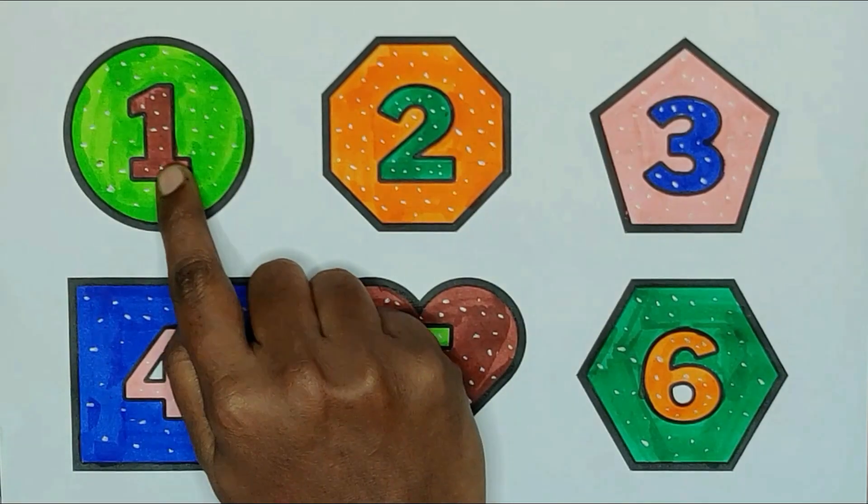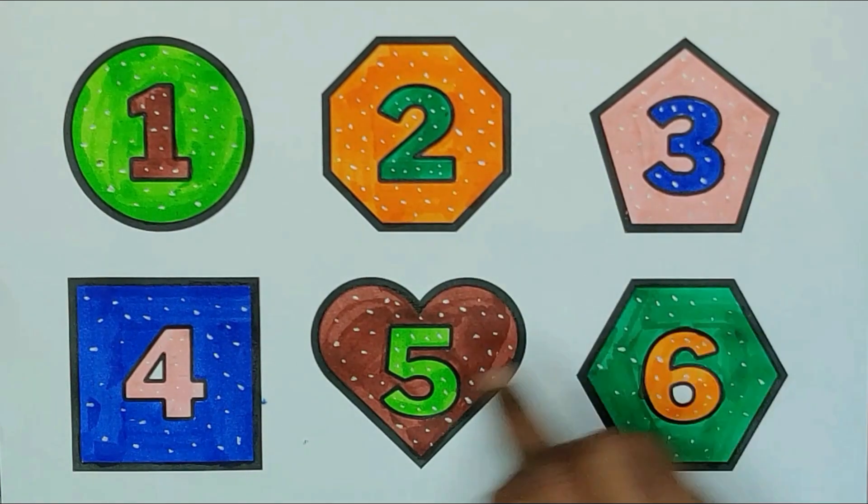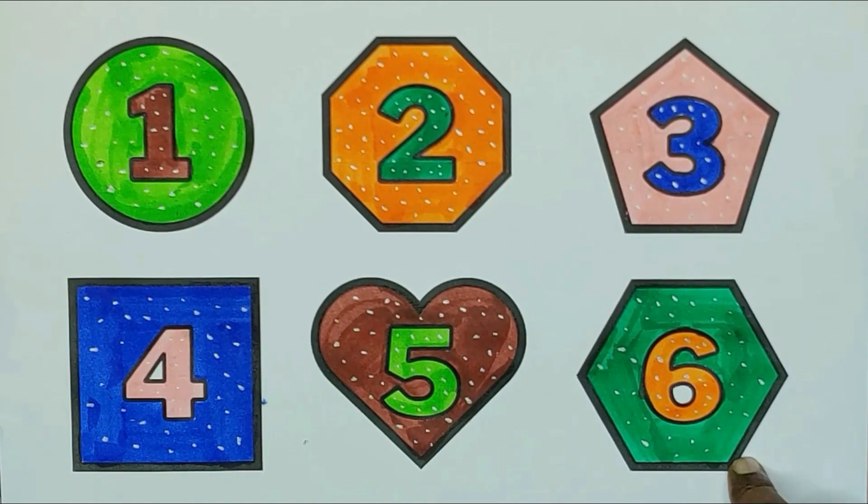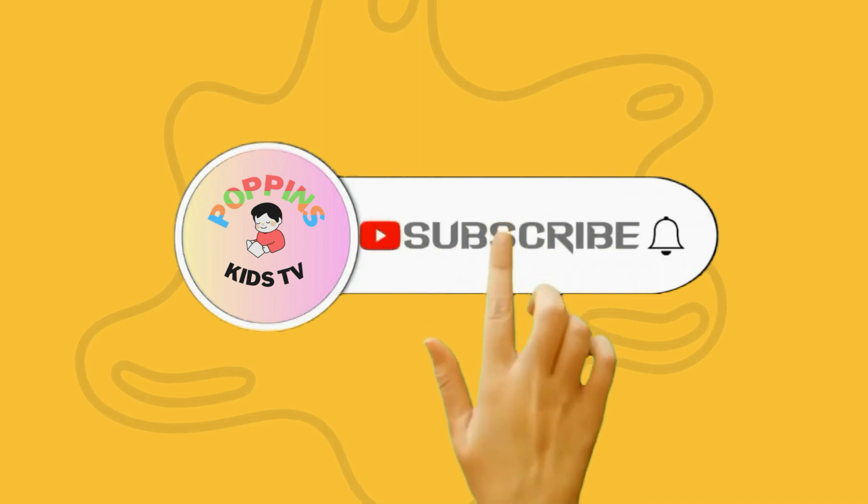One, circle. Two, octagon. Three, pentagon. Four, square. Five, heart. Six, hexagon. Thank you for watching, kids. Subscribe my channel. Bye.